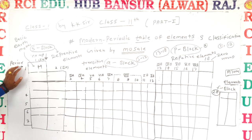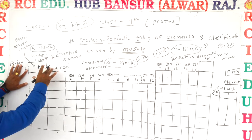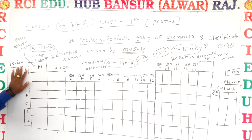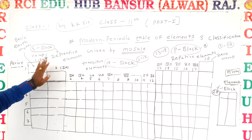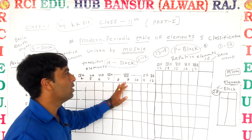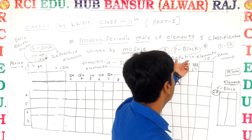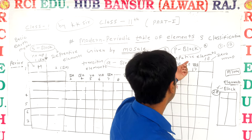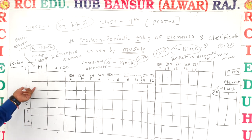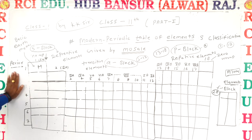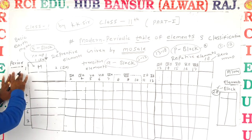First of all, we study about S-block elements. S-block elements are also called representative elements, and P-block elements share the same name. However, there is a difference between P-block and S-block according to the number of electrons in this part.